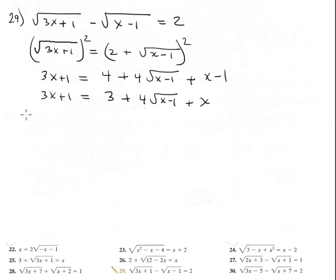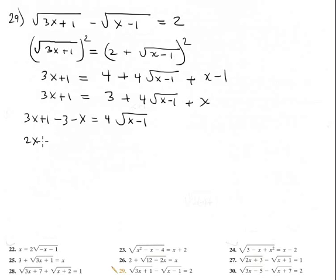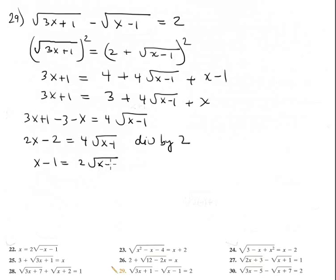Isolate the second radical: 3x plus 1 minus 3 minus x equals 4 times the square root of x minus 1. Combining like terms: 2x minus 2 equals 4 times the square root of x minus 1. Dividing the entire equation by 2: x minus 1 equals 2 times the square root of x minus 1.